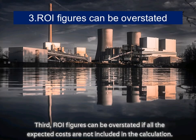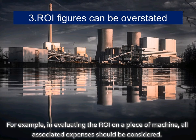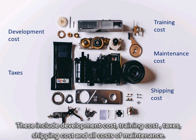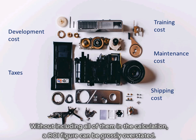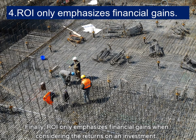Third, ROI figures can be overstated if all the expected costs are not included in the calculation. For example, in evaluating the ROI on a piece of machinery, all associated expenses should be considered. These include development cost, training cost, taxes, shipping cost, and all costs of maintenance. Without including all of them in the calculation, an ROI figure can be grossly overstated.